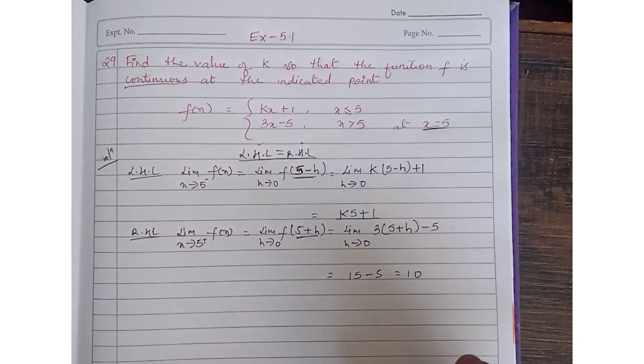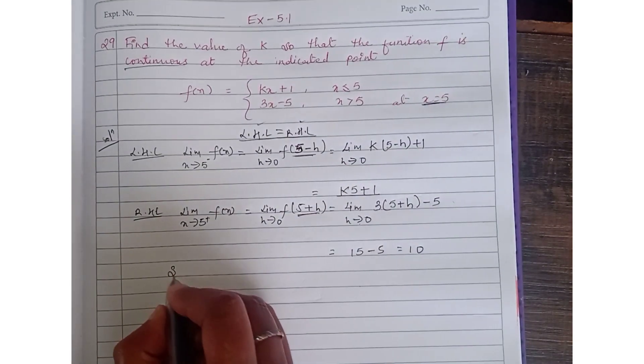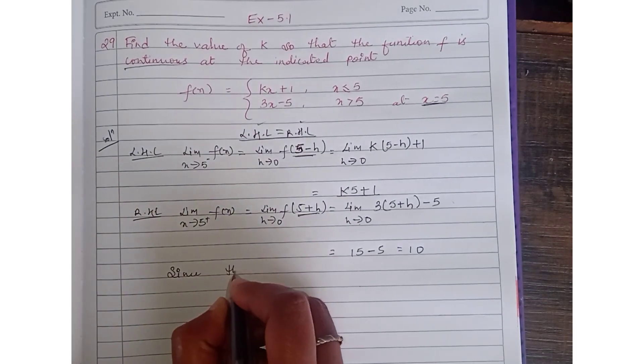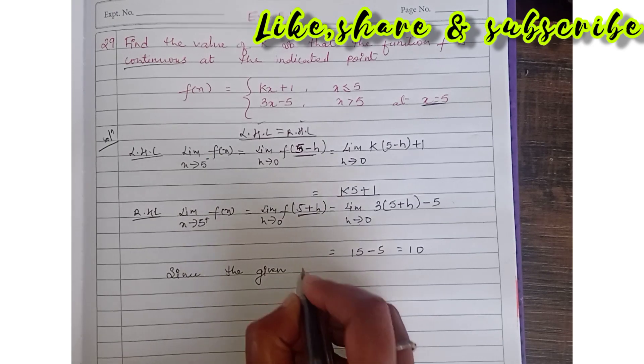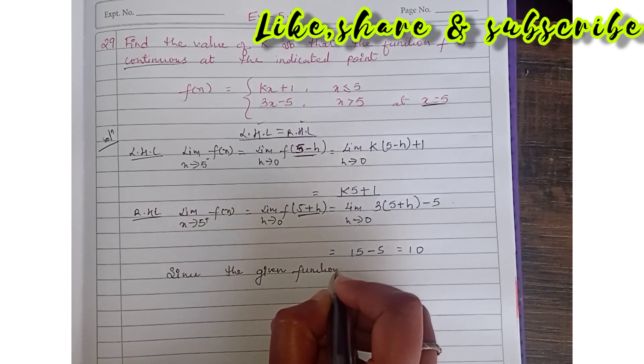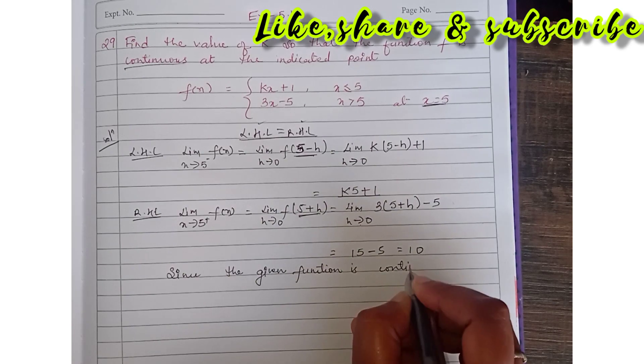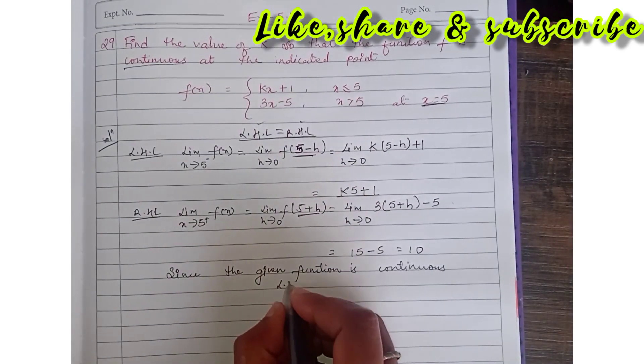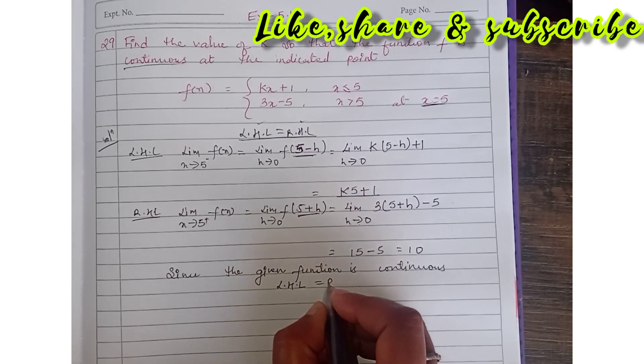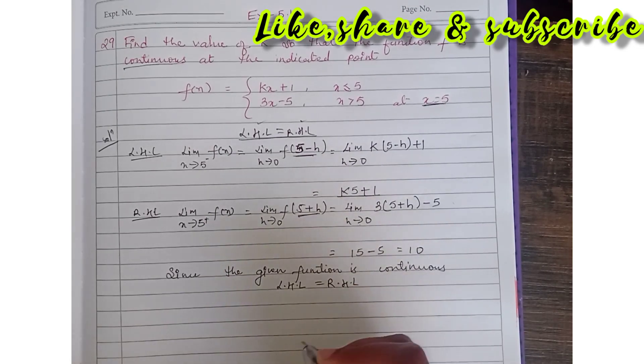Okay, so what can we say? Since the given function is continuous at x equals 5, LHL equals RHL. So LHL, we have k(5) plus 1 equals RHL, which is 10.